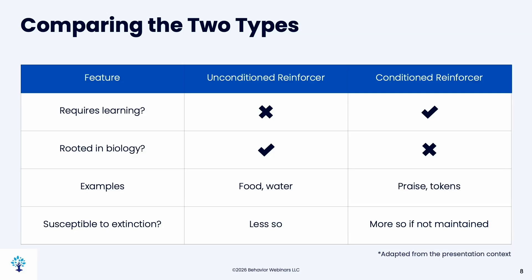Unconditioned reinforcers are not very susceptible to extinction — if you stop providing them, behavior diminishes much more slowly. For example, a hunter-gatherer searching for fruit will keep trying other strategies before giving up. Conditioned reinforcers extinguish faster. If a child is tantruming for an iPad and you remove it, that behavior extinguishes more quickly because it's not something they need for survival.